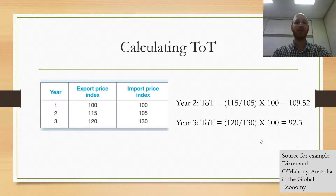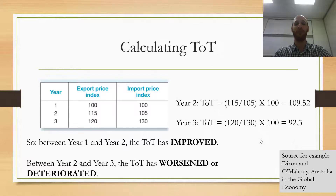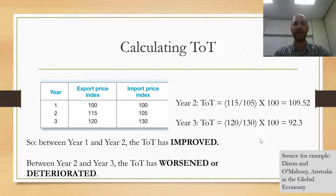For year 3, I've got 120 divided by 130 times 100, which is 92.3. So between years 2 and 3 the terms of trade has deteriorated. To summarize: between year 1 and year 2 the terms of trade has improved — it has got bigger — but between year 2 and year 3 the terms of trade has worsened or deteriorated. Please pay careful note to the language we use.